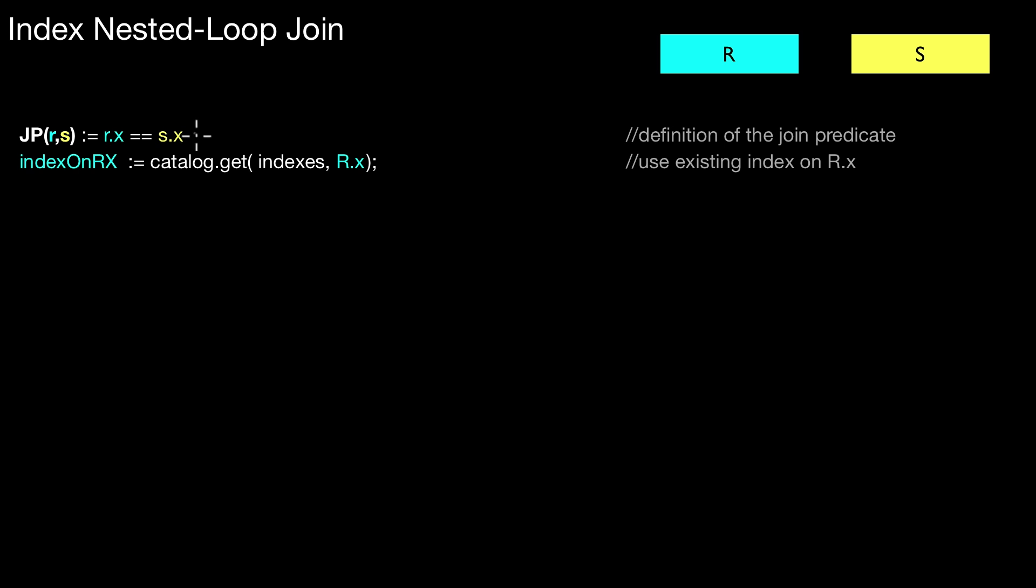So this call only makes sense if there's an index that is referred to in the join predicate. So here in the equi-join predicate, I'm comparing the values of the X attributes of R and S. I can run this algorithm either if I have an index on this attribute of relation R or on that attribute on relation S.